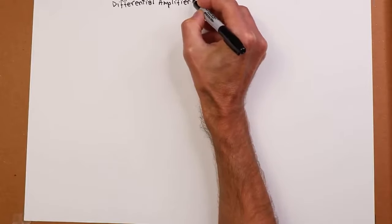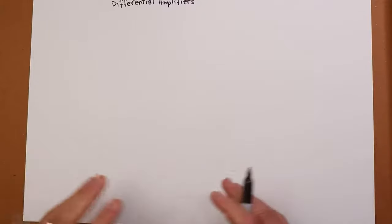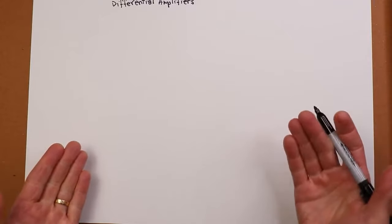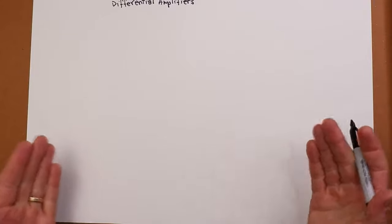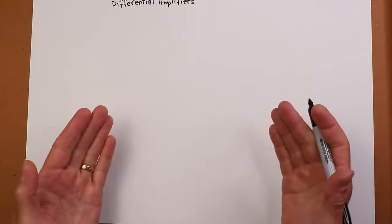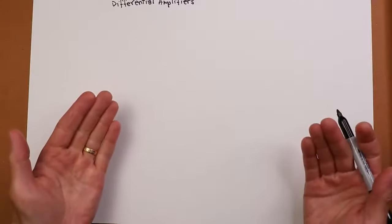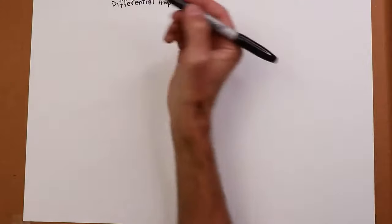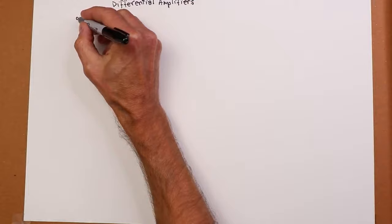Differential amplifiers are the core building block of operational amplifiers, so it's good we understand how they work. Essentially, this is a configuration that has two inputs and one output. It takes the difference between the two input voltages to produce an output voltage. How does it do this? Well, let's take a look at a simple example.